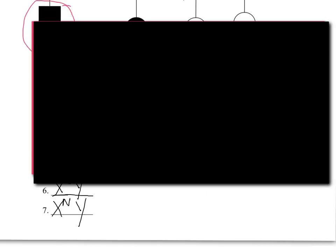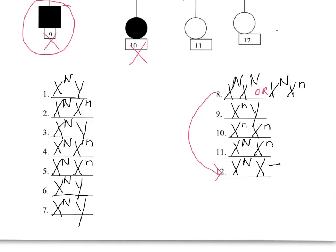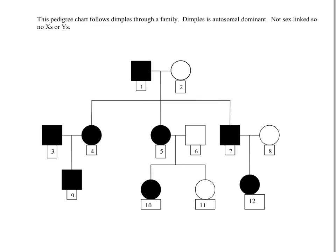Okay, are you ready to see the answers? Okay, here they are. Pause the video if you need to. Notice at number eight and number twelve, you can write the unknown genotypes either way.